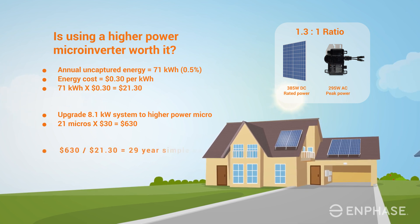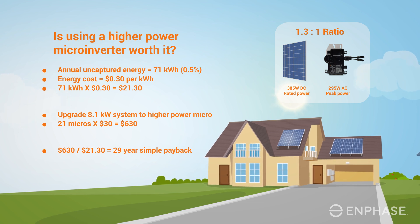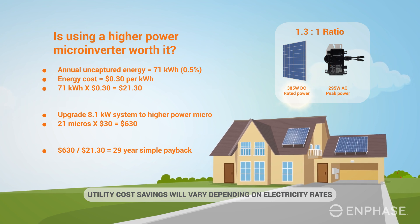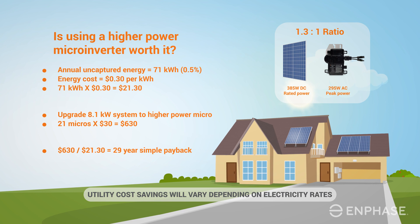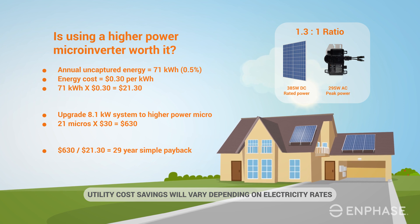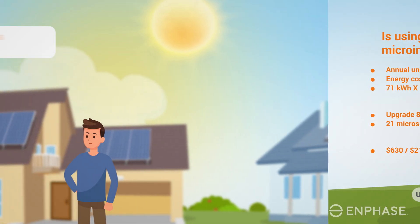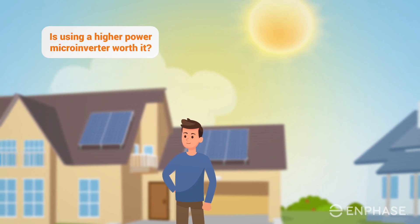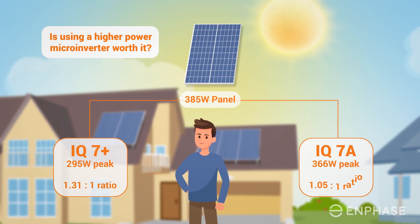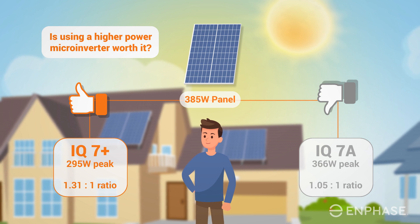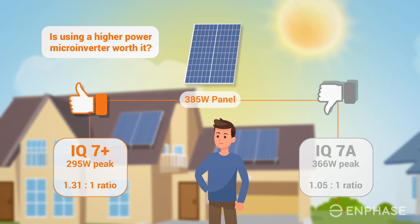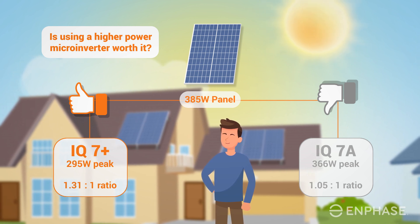Dividing $630 by $21 tells us that it would take 29 years to pay for itself. It is worth noting that over time, the amount of uncaptured energy will decrease as the solar panels gradually degrade with age and put out less power. So the payback period will actually be longer than this simple payback calculation suggests. In this scenario, we have determined that the higher cost of using a higher power microinverter is not justified — the higher ratio of 1.3 to 1 is the better value. Most PV systems won't have such ideal conditions. If your system has a less optimal orientation or is in a location with less intense sunshine, you could choose to go with an even higher ratio.